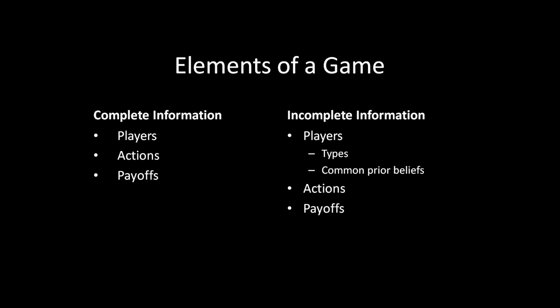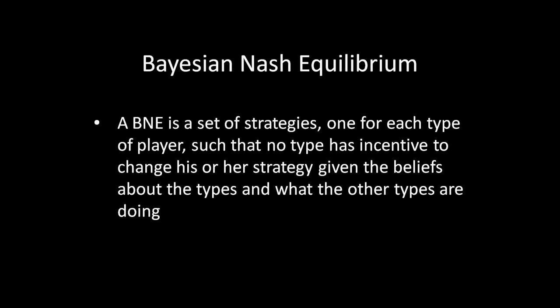Let's look at the definition of Bayesian Nash Equilibrium. A Bayesian Nash Equilibrium is a set of strategies, one for each type of player, such that no type has incentive to change his or her strategy, given the beliefs about the types and what the other types are doing. Everything shown in red is what differentiates a Bayesian Nash Equilibrium from a Nash Equilibrium — we're extending the logic of Nash Equilibrium to situations where there are multiple types of players and uncertainty about which types we're facing.